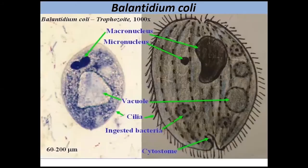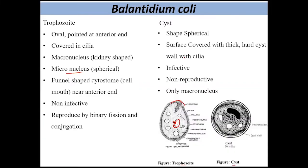The trophozoite also has a round-shaped micronucleus and a funnel-shaped cytostome — the cell mouth — located at the anterior end. The trophozoite stage is non-infective but can cause symptoms in the host. Reproduction in the trophozoite occurs by binary fission and conjugation.